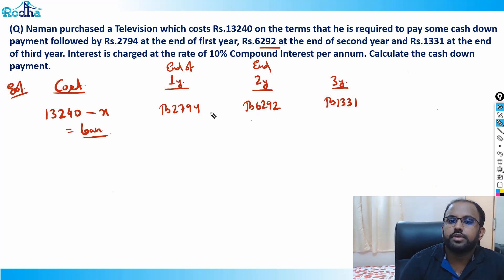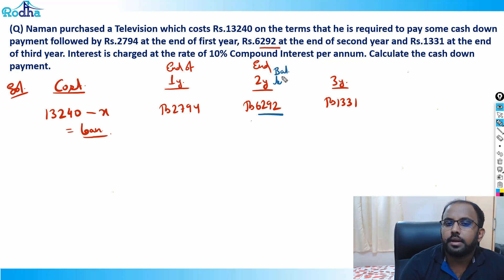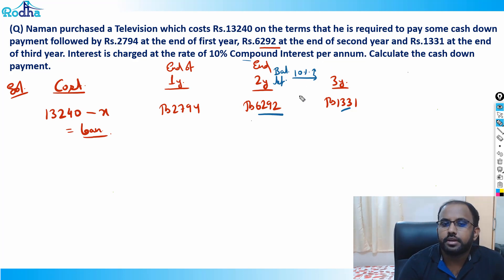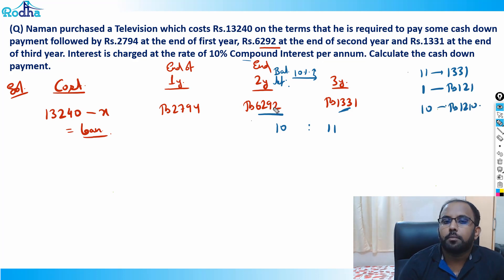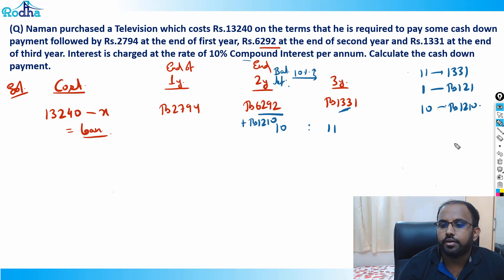The same approach applies because all the installment values are given. Whatever balance remains after paying ₹6292 will increase by 10% (CI) to become ₹1331. So the ratio is 10:11. Value of 11 is ₹1331, value of 1 is ₹121, so value of 10 is ₹1210. The balance amount here was ₹1210.